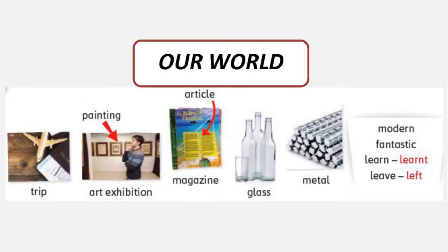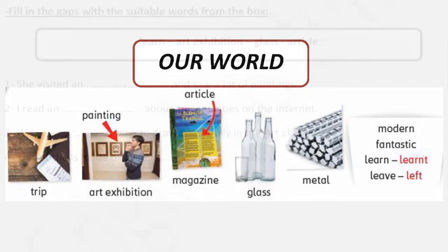Our World lesson. We had the word 'trip' — from one place to another — and the most famous expression is 'school trip.' We have 'art exhibition' — a place where paintings or portraits are displayed for the public. A 'painting' is something like a portrait. We also have 'magazine' — and in a magazine there are articles. We have materials like metal. 'Modern' means new. Words like 'fantastic' and 'amazing.' We have 'learn' — both pronunciations are valid. And the word 'leave,' which means go, come, or arrive — and its past tense is 'left.'